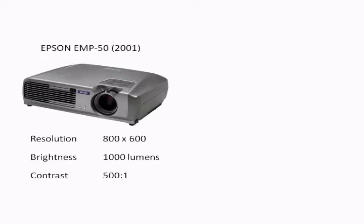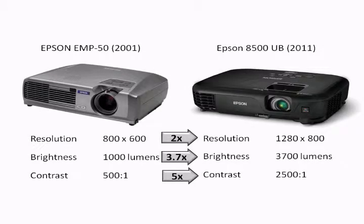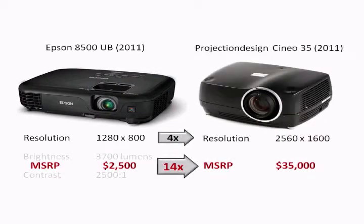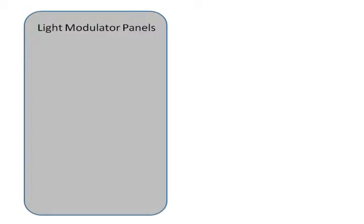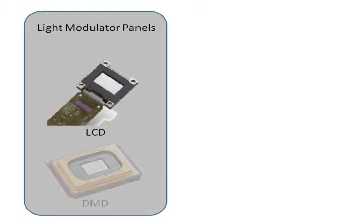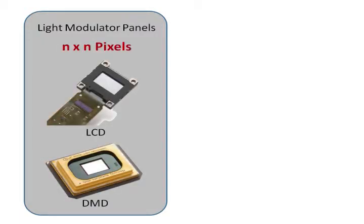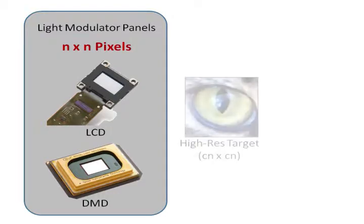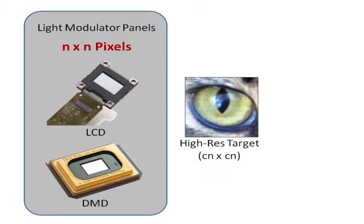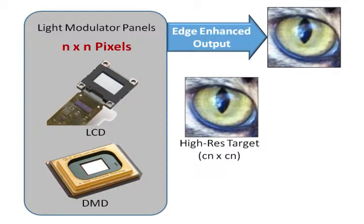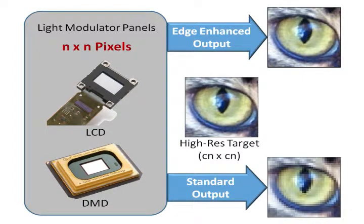Digital projection technology has improved significantly in recent years, but the relationship of cost with respect to the available resolution in projectors is still super linear. In this paper, we present a method that uses light modulator panels — for example LCD or DMD panels — with n by n pixels to create the perception of a target higher resolution CN by CN image, where C is a small integer. This is achieved by enhancing the resolution at specific regions of interest like edges, and provides superior quality compared to the standard n by n projector output.